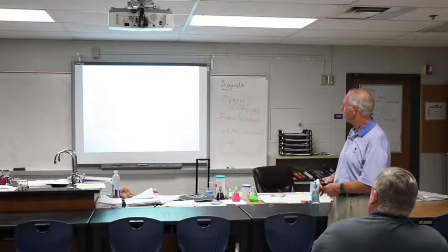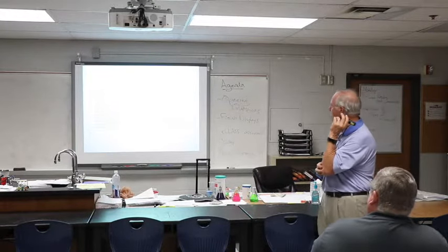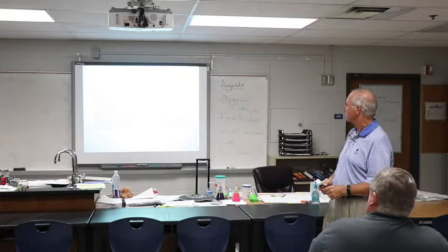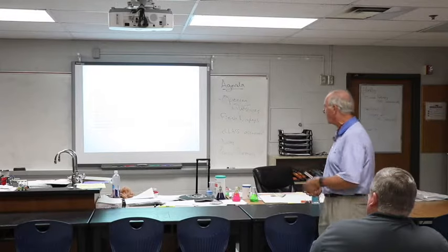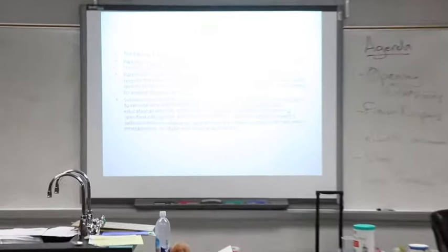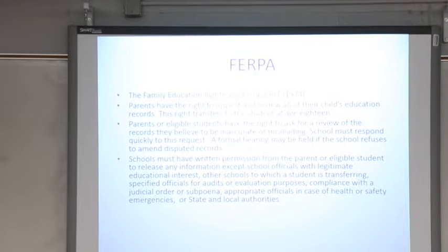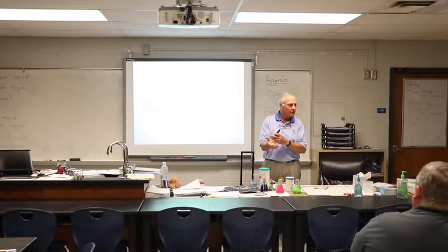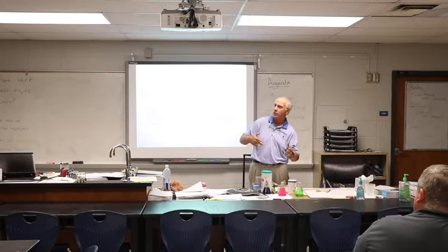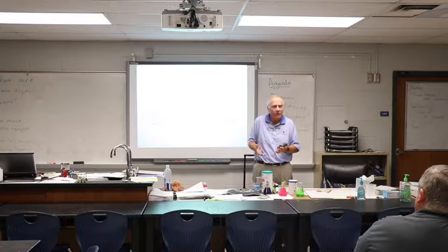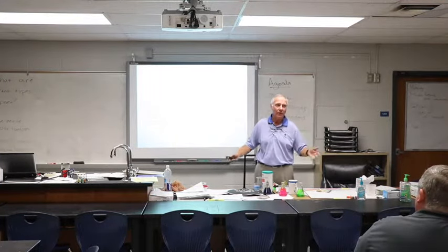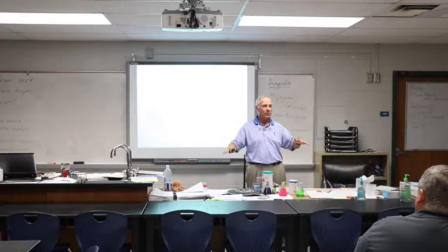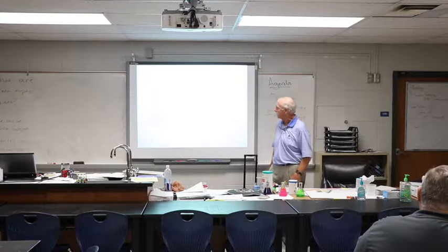Schools must have written permission from the parent or eligible student to release any information, except to school officials with legitimate educational interests, other schools to which a student is transferring, specified officials for audits or evaluation purposes, compliance with judicial orders, officials in cases of health and safety, and state and local authorities. If you're going to release information, you need some type of written statement — usually a place in the student handbook where parents sign if they do not want information released.